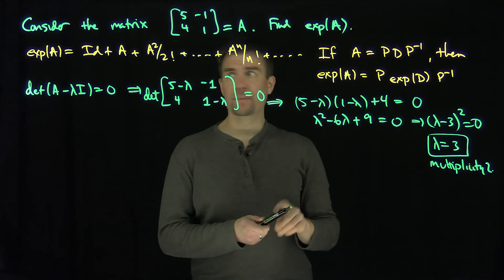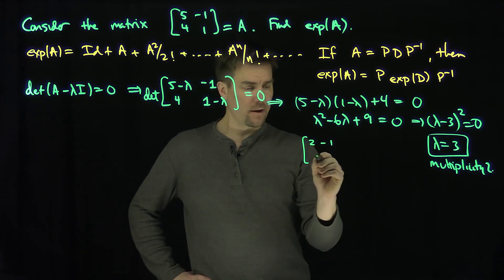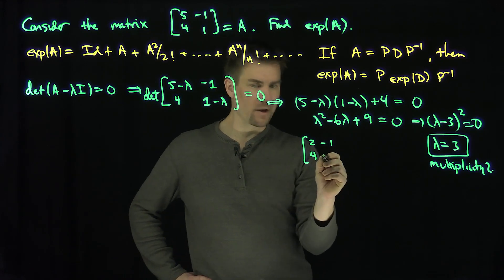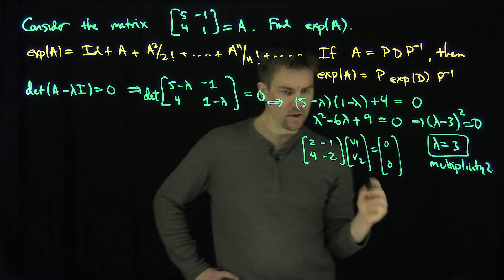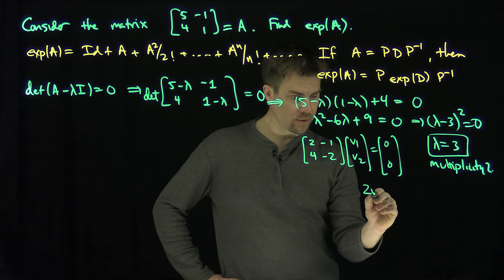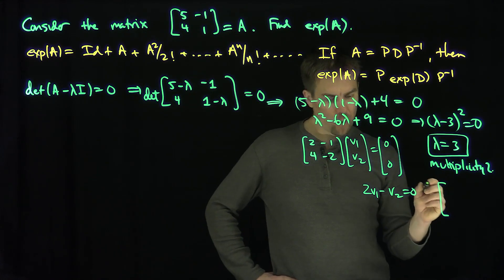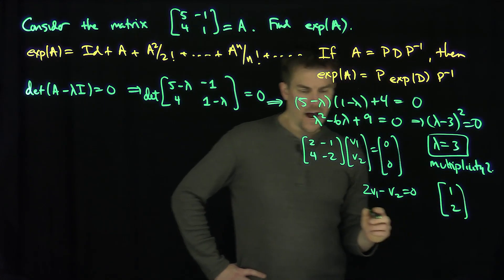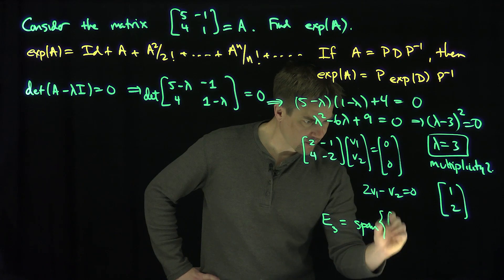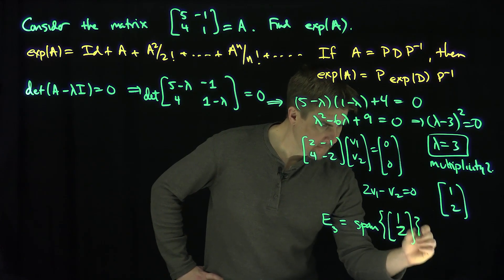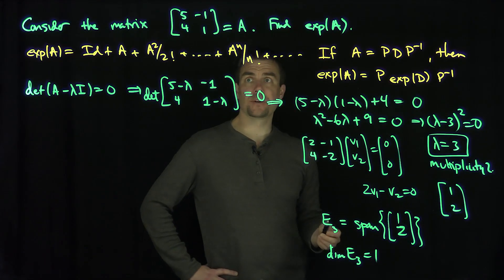To find the eigenvector corresponding to λ = 3, the eigenvector equation gives the matrix [[2, -1], [4, -2]] times [v1, v2] = [0, 0]. These equations are redundant; we get 2v1 - v2 = 0. So the only eigenvector is [1, 2]. The eigenspace E3 is the span of [1, 2], and its dimension is one. Therefore, this matrix is not diagonalizable.